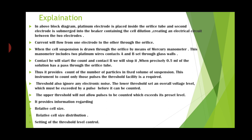Current will flow from one electrode to the other through the orifice when the cell suspension is drawn through the orifice by means of a mercury manometer. This manometer includes two platinum wire contacts, A and B, set through glass walls. The count will start when contact A is reached by the solution.